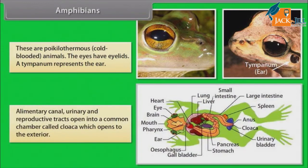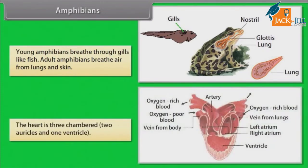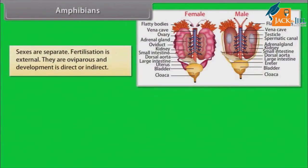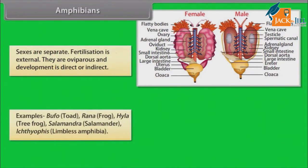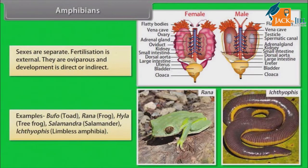The alimentary canal, urinary and reproductive tracts open into a common chamber called cloaca, which opens to the exterior. Young amphibians breathe through gills like fish. Adult amphibians breathe air from lungs and skin. The heart is three-chambered — two auricles and one ventricle. Sexes are separate. Fertilization is external. They are oviparous and development is direct or indirect. Examples: Bufo (Toad), Rana (Frog), Hyla (Tree Frog), Salamandra (Salamander), Ichthyophis (Limbless Amphibia).